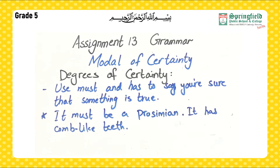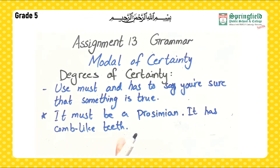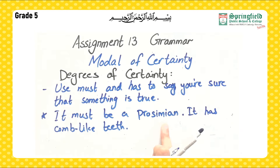For example: 'It must be a proscenian — it has comb-like teeth.' You're sure it has comb-like teeth, and proscenians have comb-like teeth, so it must be a proscenian. Another example: 'It has to be a spider — it has eight legs.' As you can see it has eight legs, so it must be a spider.